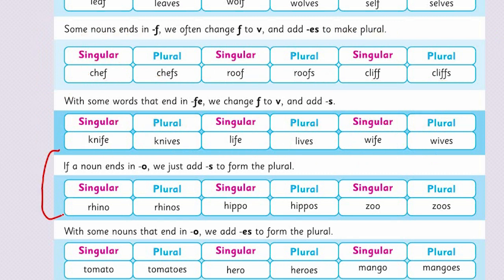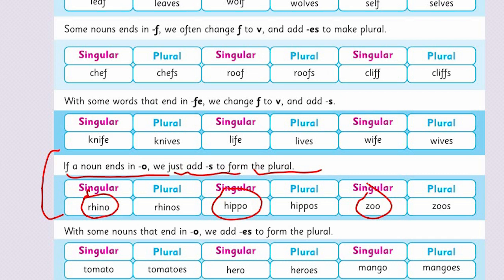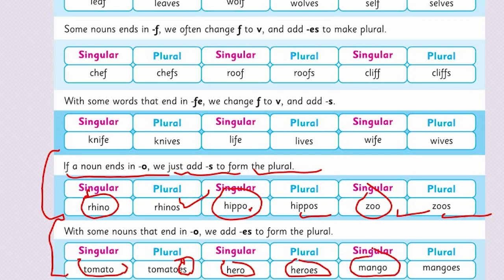Now look at another way of changing singular to plural. If a noun ends in O, we just add S to form the plural. But with some nouns that end in O, we add ES to form the plural. Like: tomato → tomatoes, hero → heroes, mango → mangoes.